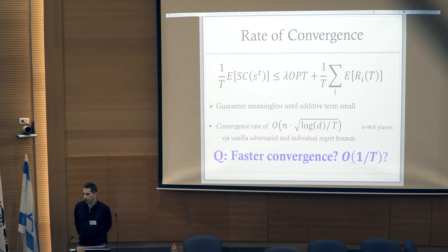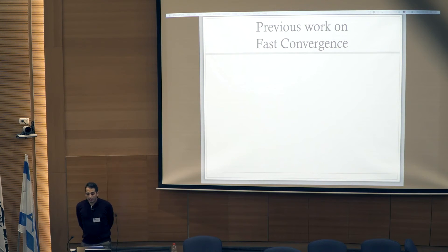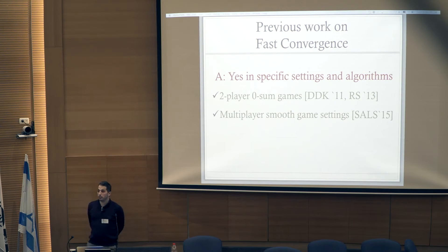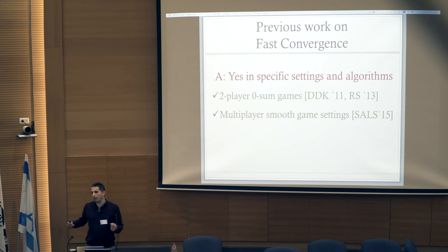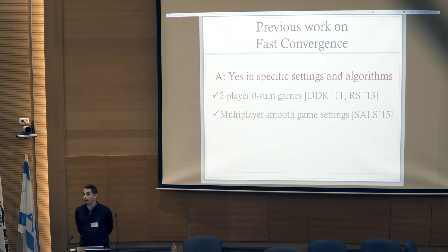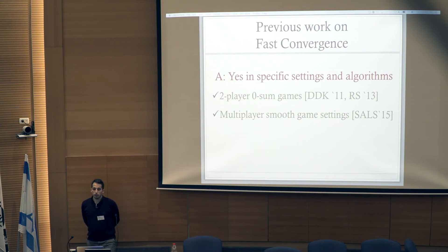In the case of two-player zero-sum games, Daskalakis, Deckelbaum and Kim, and later Rakhlin and Sridharan, showed that if all players use a specific algorithm, they converge to the minimax value at a rate of 1/T. Later, Syrgkanis, Agrawal, Haipeng Luo, and Schapire extended this to multiplayer settings, showing that if all players use optimistic Hedge, they converge to efficient outcomes reaching the price of anarchy.